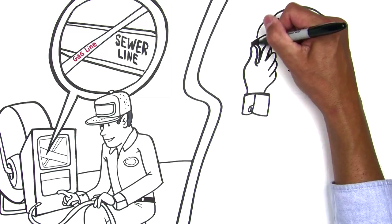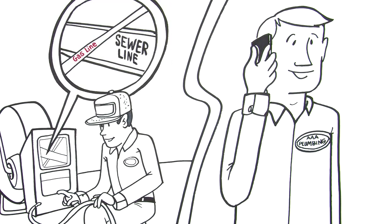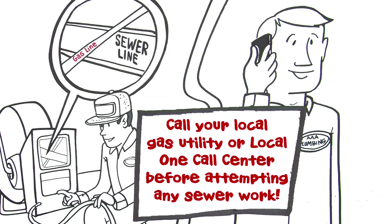If available, use a camera to inspect the sewer lines for the presence of a natural gas line. If a natural gas line is found, call your local gas utility or local one-call center before attempting any sewer work.